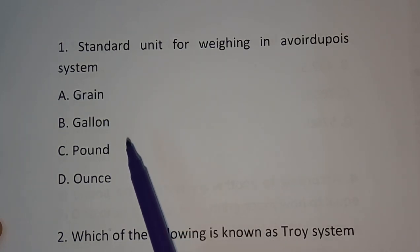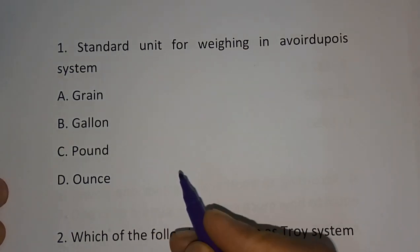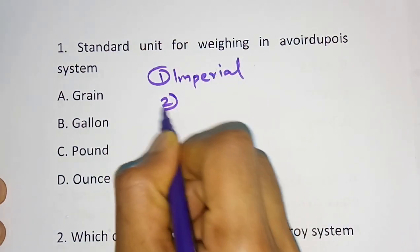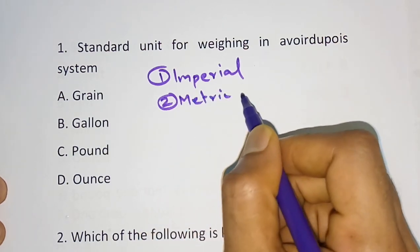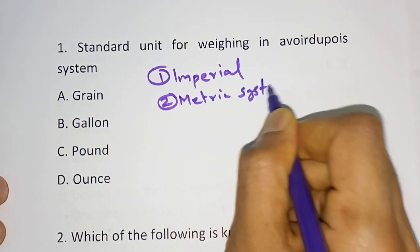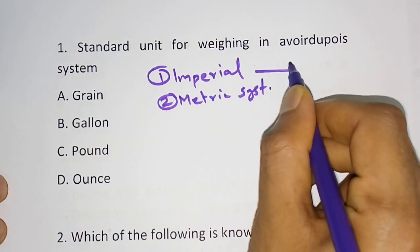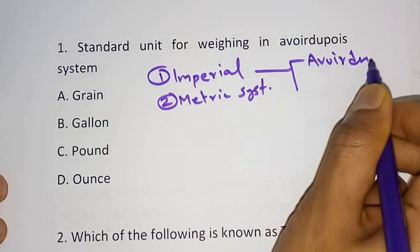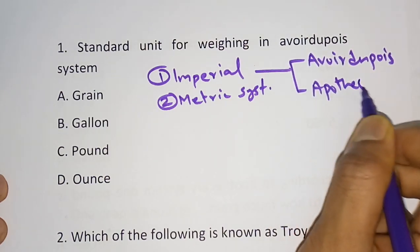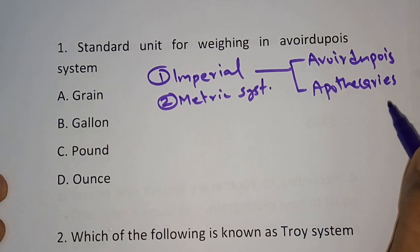There are two systems for weighing. One is the imperial system and the other is the metric system, which is like the SI unit. The imperial system is further classified into two types: avoirdupois and apothecaries. These are the two types of the imperial system.